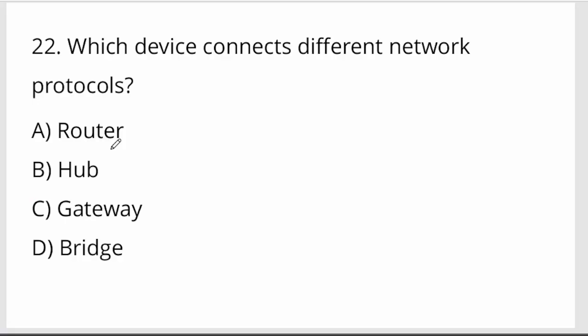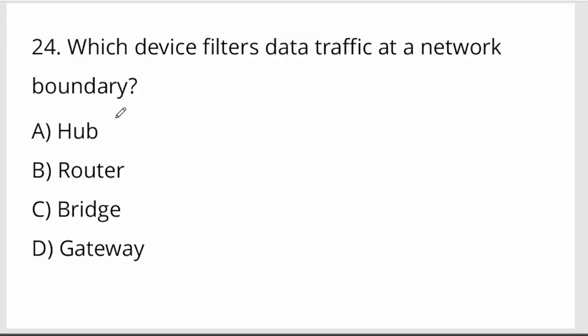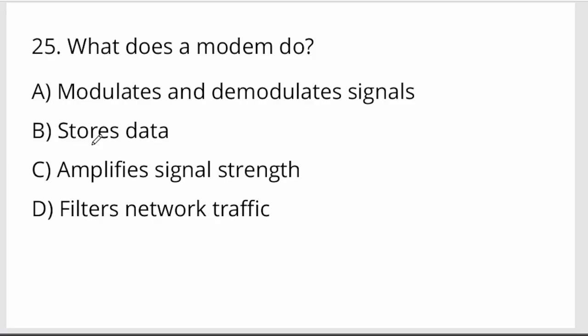What is the key function of a hub in a network? A device that filters data traffic at a network boundary — that is also a router. Option B.